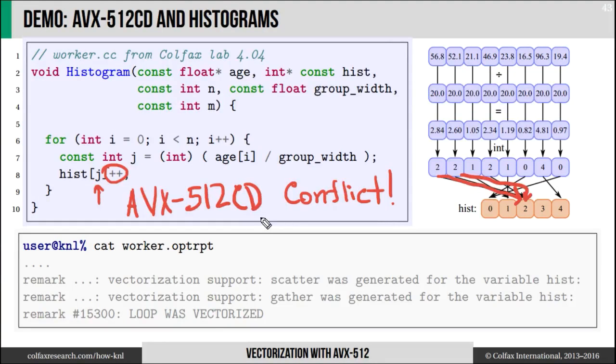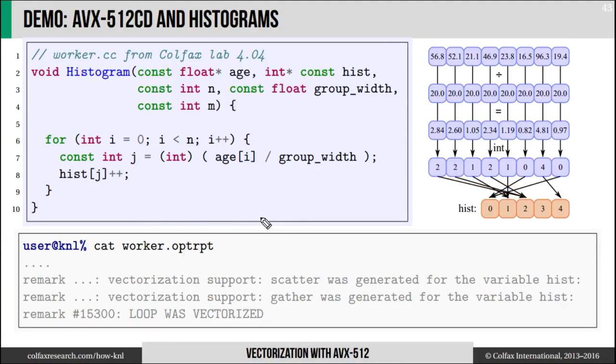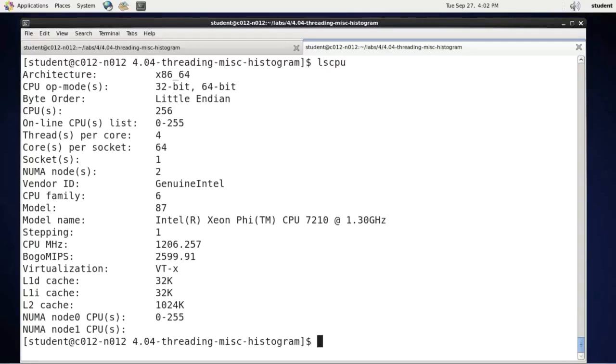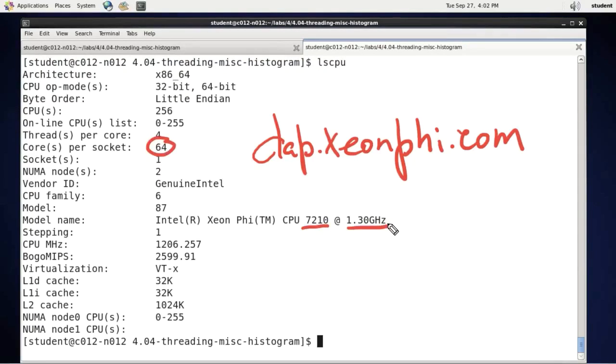I will illustrate this process hands-on on a workstation that has an Intel Xeon Phi processor in it. So this is my server, one of the machines from dap.xeonphi.com. It has Intel Xeon Phi 7210 CPU with 64 cores clocked at 1.3 gigahertz.